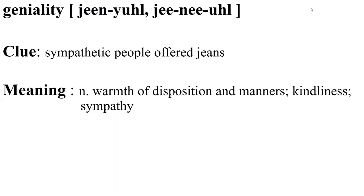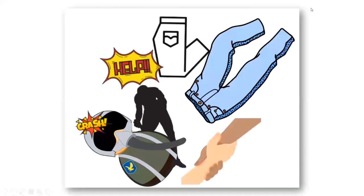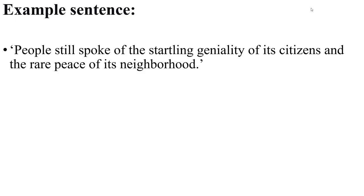Geniality. Clue: sympathetic people offer jeans. Geniality means warmth of disposition and manners, kindliness or sympathy. Visualize sympathetic people offering a helping hand to the crashed pilot — they even gave him new clothes or jeans. Example: people still spoke of the startling geniality of its citizens and the rare peace of its neighbourhood. This example is about the sympathy shown by citizens and the rare peace present in an area.